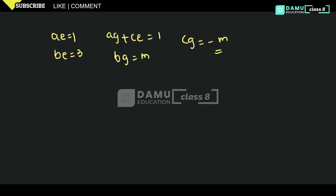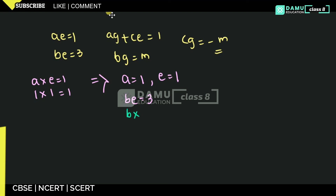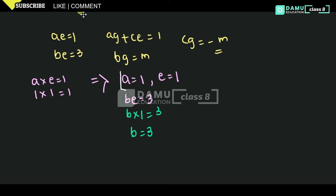From ae = 1, since we need integer values, a = 1 and e = 1. Substituting e = 1 into be = 3 gives b times 1 = 3, so b = 3. So we have a = 1, e = 1, and b = 3.